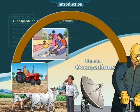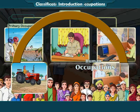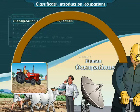Classification of Human Occupations. Human occupations are broadly classified into three categories: Primary Occupations, Secondary Occupations, and Tertiary Occupations.